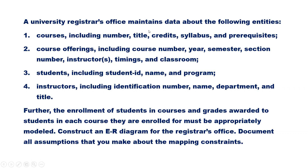A university registrar's office maintains data about the following entities: Courses including number, title, credits, syllabus and prerequisite. Course offerings including course number, year, semester, session number, instructors, timing and classroom.